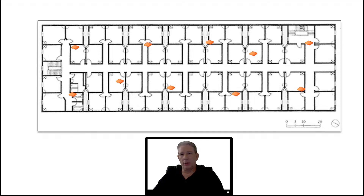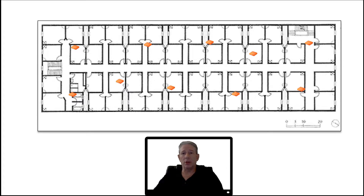Auto Cell Sizing is a feature that allows access points per radio to turn their power up and down as needed, based on things happening in their environment and how well they detect surrounding SmartZone access points. This feature is disabled by default. To use it, you must also have background scanning enabled. When you enable Auto Cell Sizing, it removes your ability to manually set the power settings for your radios.